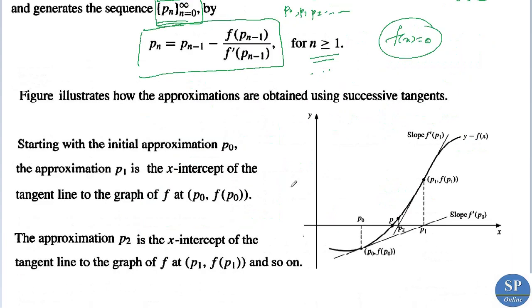The following figure illustrates the approximations. Here we have the curve y = f(x); our aim is to find the root of y = f(x) = 0. From the figure, we can identify the root of the given equation. If we take an initial approximation p₀, then the point (p₀, f(p₀)) lies on the curve.